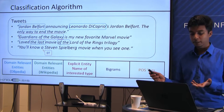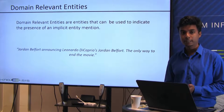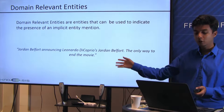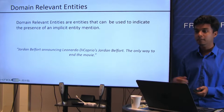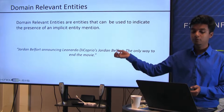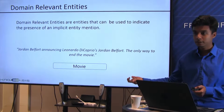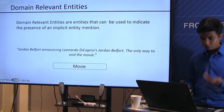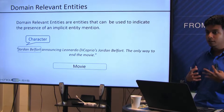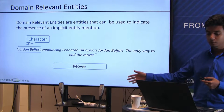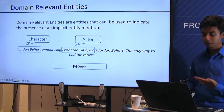Domain-relevant entities are entities that can indicate the presence of an implicit entity mention. For example, given a tweet with 'Jordan Belfort' and 'Leonardo DiCaprio,' a human annotator can recognize these as indicating a movie mention. Jordan Belfort is a character in a movie, and Leonardo DiCaprio is an actor who has appeared in many movies. These are what we call domain-relevant entities — entities relevant to the entity type of interest.